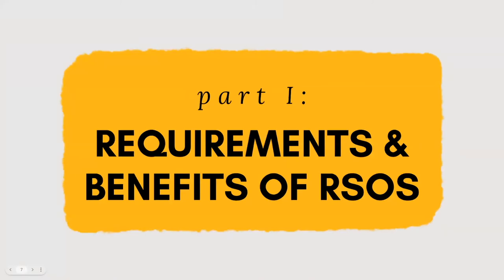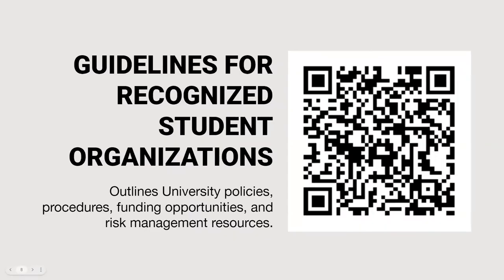The next part of today's training is going to talk through some of the requirements and benefits of recognized student organizations. Please take a moment to scan the QR code on the screen. This QR code will give you access to the guidelines for recognized student organizations, which is the governing document for RSOs. It has all of the information you will need to be successful at Mizzou. More information can be found in this document related to annual requirements, funding deadlines and information, fundraising policies, and other related information. ORG advises that you always reference the guidelines first when you have a question.